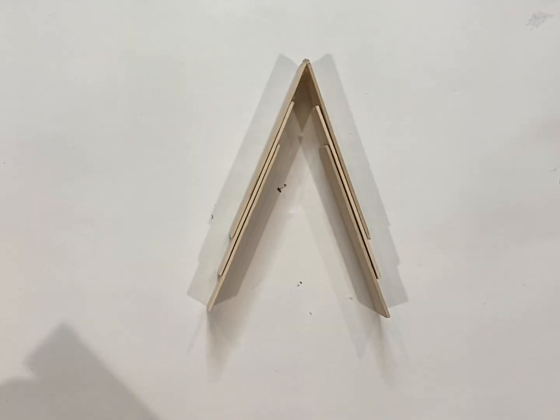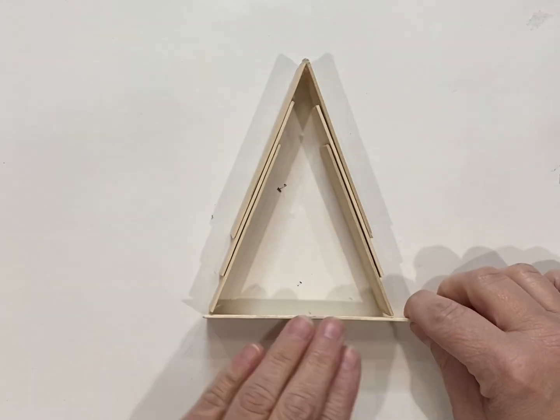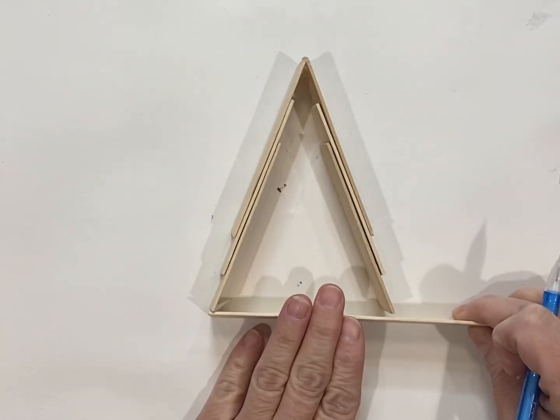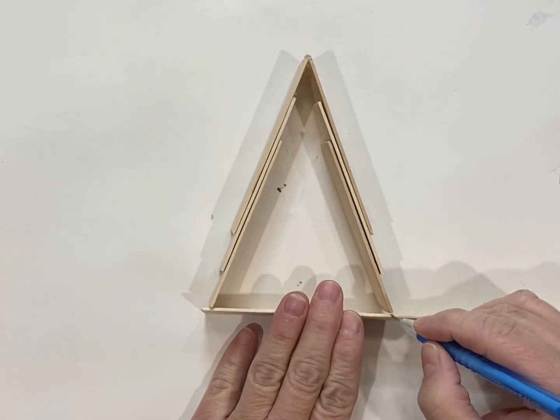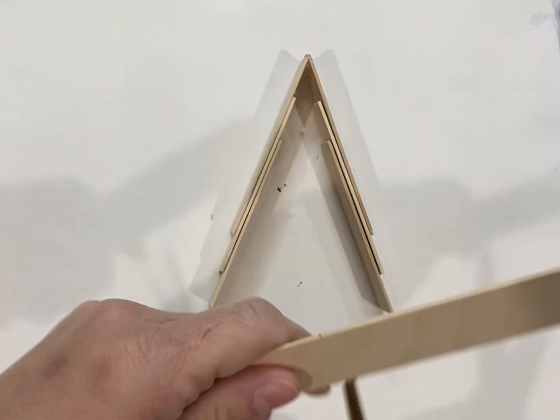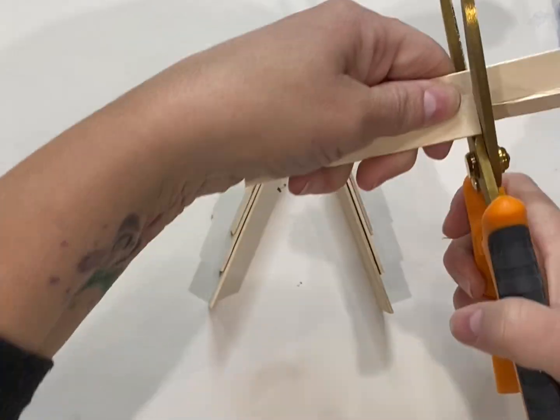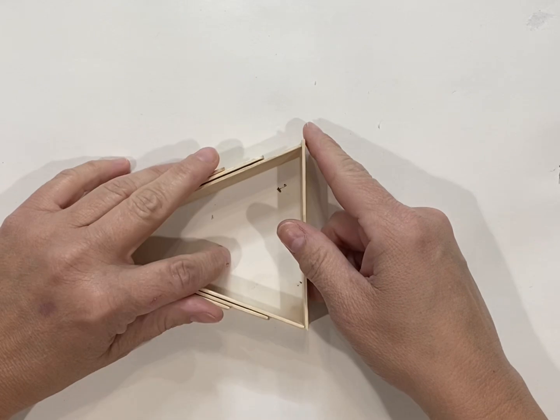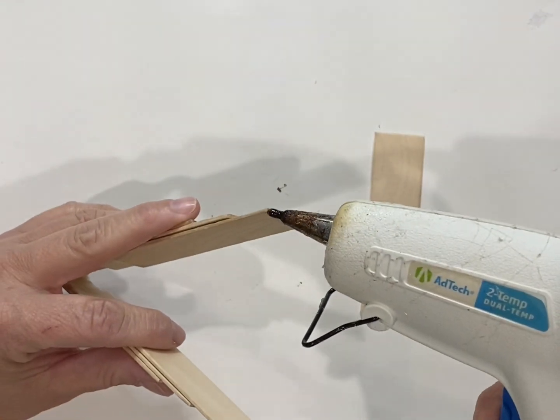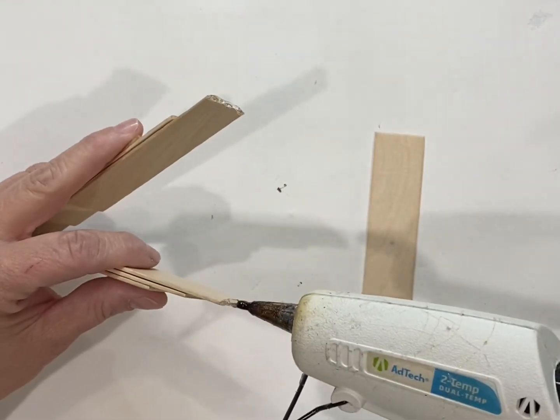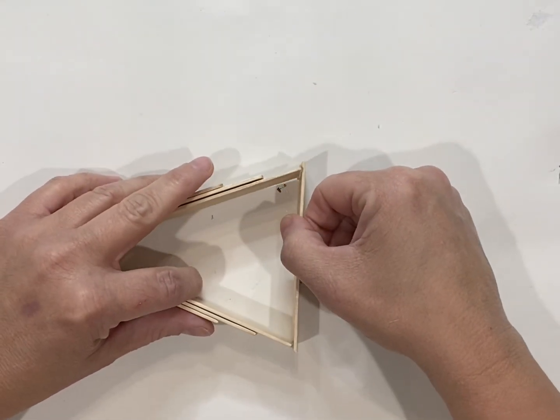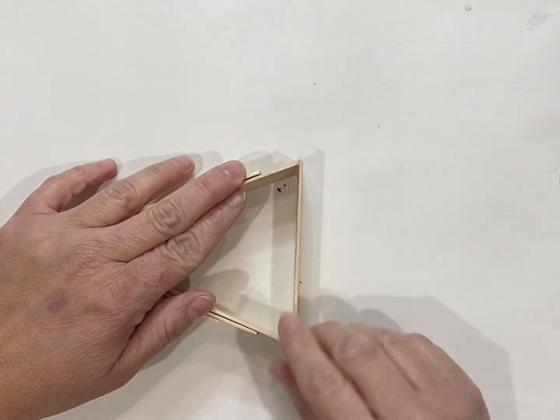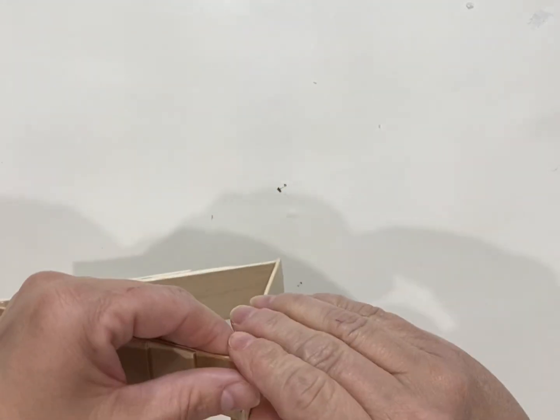For the bottom piece we're gonna take another jumbo stick and cut the rounded end off. Then we're gonna mark how wide the tree is, and I'm gonna take my snips and cut that off so we have the base. I'll take my hot glue gun and put some glue on the ends and put the bottom piece on. Let it set up a second and then we have our little tree shape.